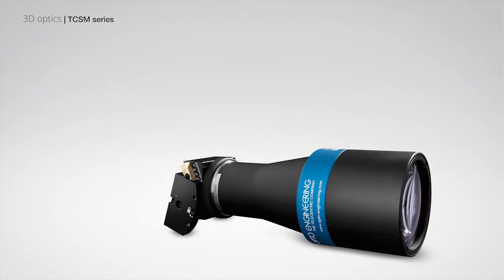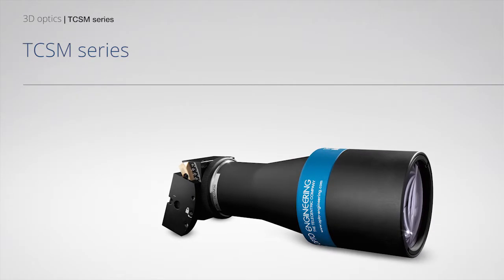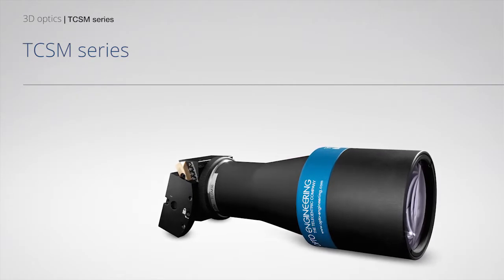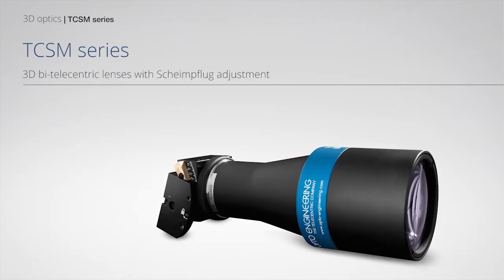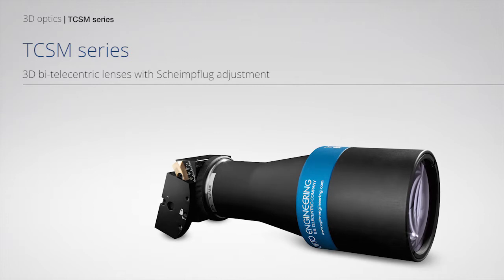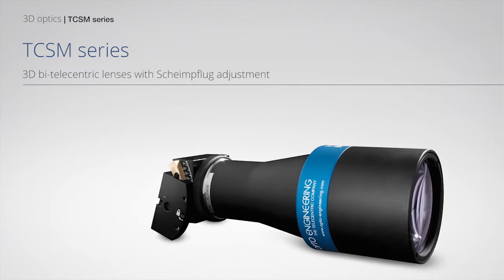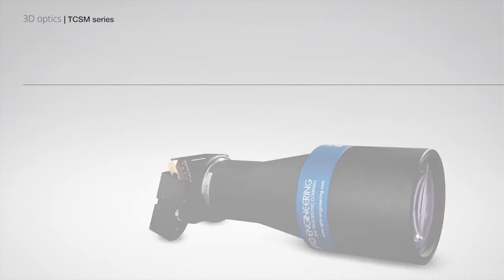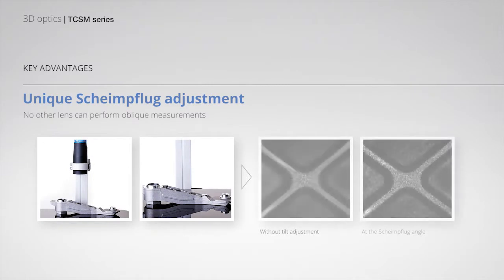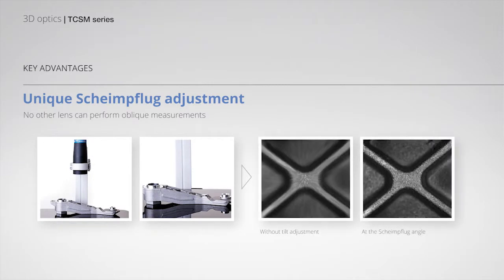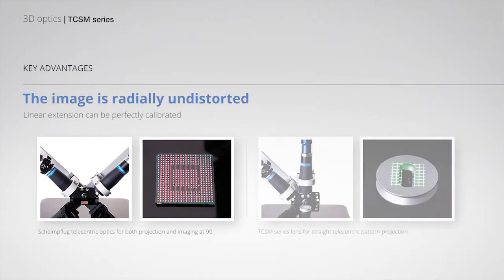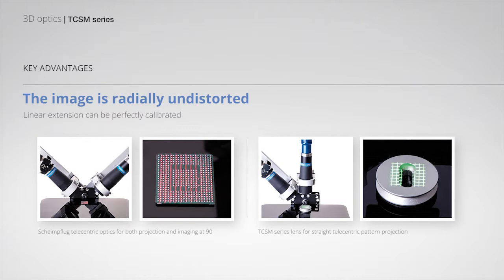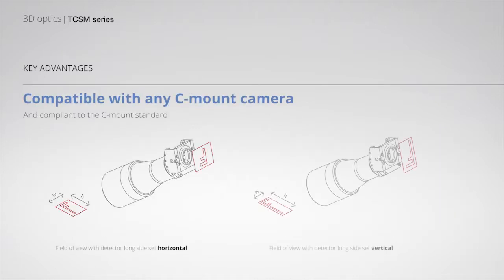DC-SM series: 3D bite telecentric lenses with Schaimflug adjustment. Unique Schaimflug adjustment ensures the image is radially undistorted, compatible with any C-mount camera.